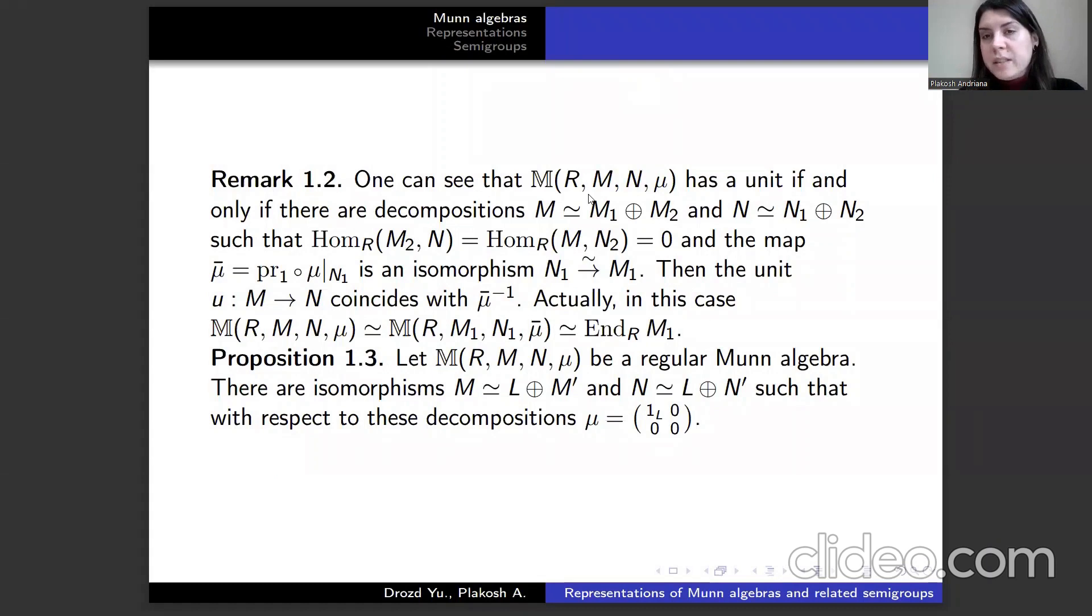One can see that M has a unit if and only if the composition μ̄ satisfies certain equations and the map μ̄ is an isomorphism. Then the unit u coincides with μ̄ inverse.